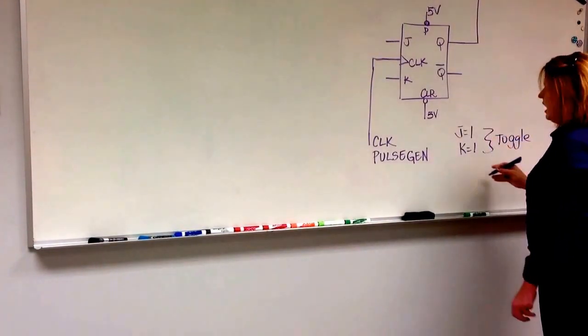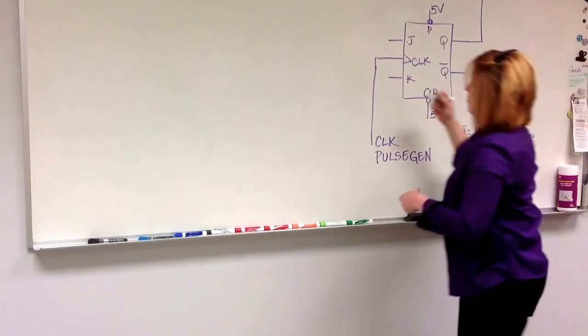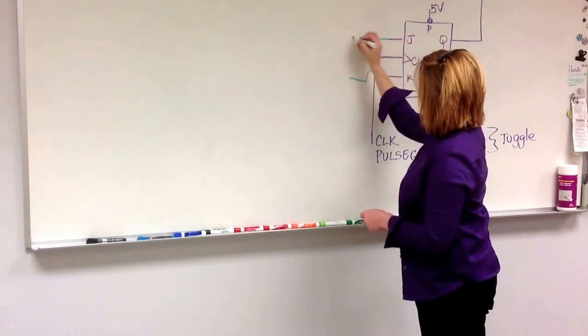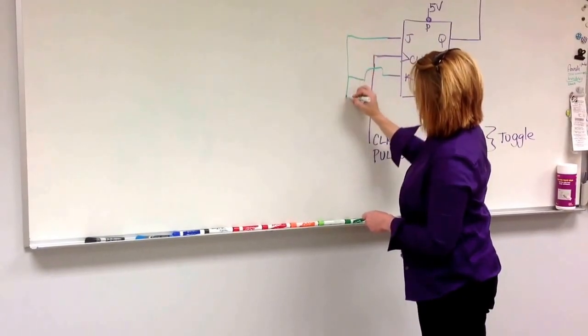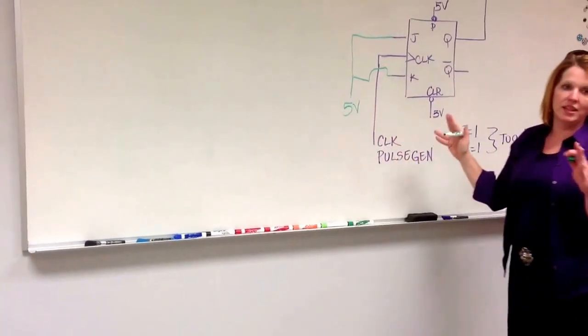And I am going to take J and K and run them to, I want them to just always be one, so I am just going to tie them both to 5 volts as well, because I want to keep them in the toggle state.